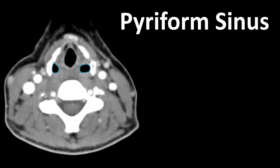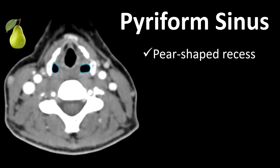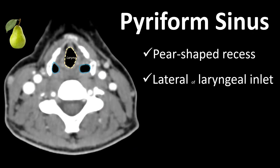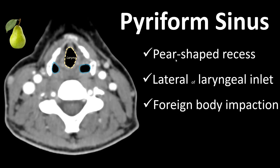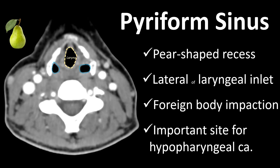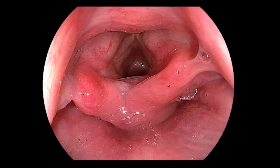The piriform sinus is no doubt the most important structure of the hypopharynx when it comes to oncological imaging, because most hypopharyngeal carcinomas originate there. These are pear-shaped recesses located on both sides of the laryngeal inlet. The piriform sinuses are clinically important areas where foreign body impaction frequently occurs, and they are also an important site for the development of hypopharyngeal carcinomas.